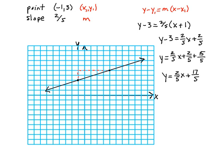And we see that this is the answer that we were looking for. Also notice that I put that answer in Y equals MX plus B form. And again, you can see in the equation that the slope is indeed 2 fifths, and the Y intercept is 17 fifths. And if you notice this over here on the graph, 17 fifths or 3 and 2 fifths.